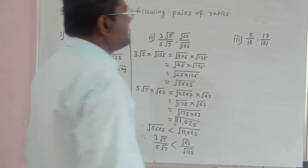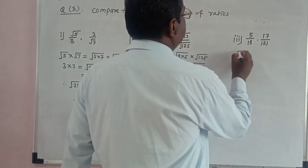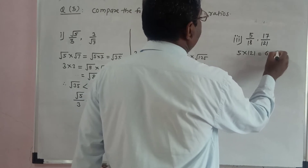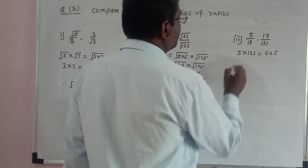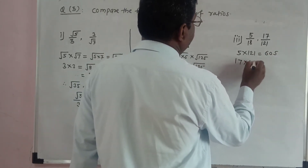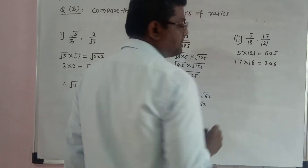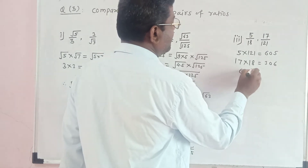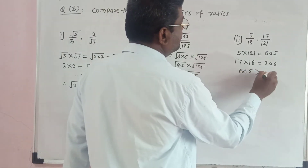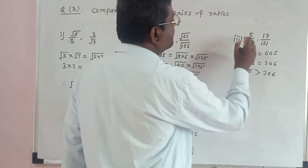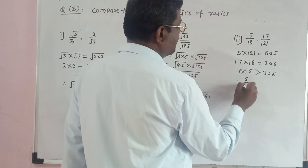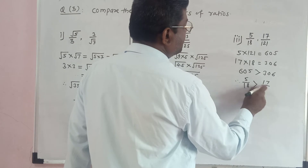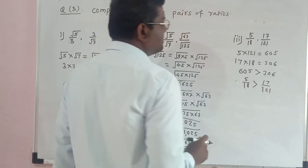Example number 3: compare 5 upon 18 versus 17 upon 121. We take cross multiplication. 5 × 121 = 605, and 17 × 18 = 306. Since 605 is greater than 306, therefore the first ratio 5 upon 18 is greater than the second ratio 17 upon 121.